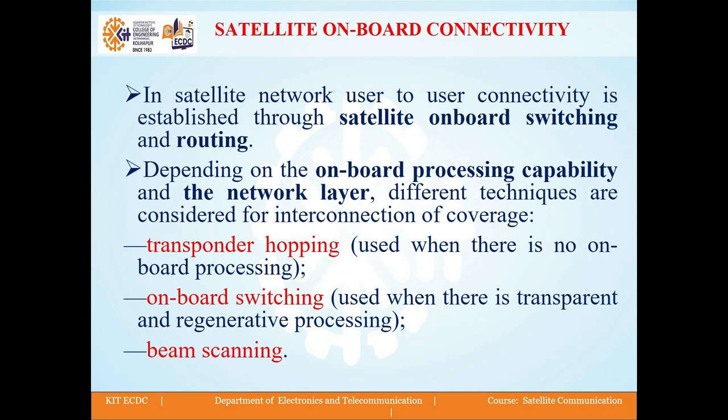Depending on the network layer and the onboard processing ability, the different methods for connectivity are transponder hopping, transparent processing, and beam scanning. In transponder hopping, it is used when there is no onboard processing. Onboard switching is used when there is transparent and regenerative processing.